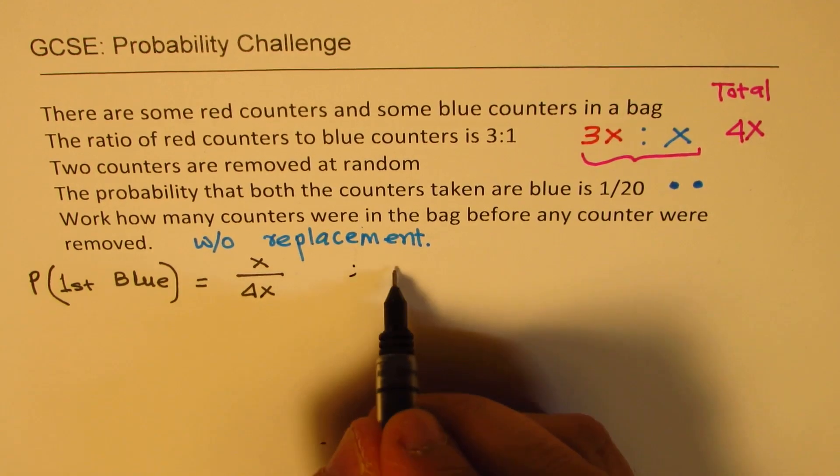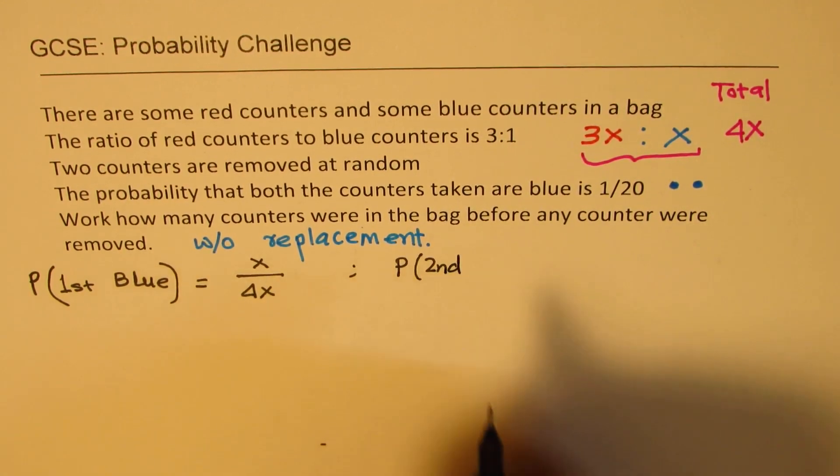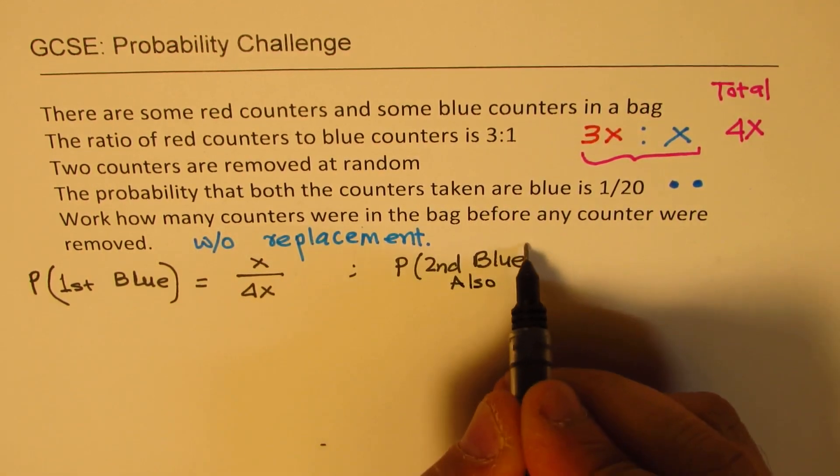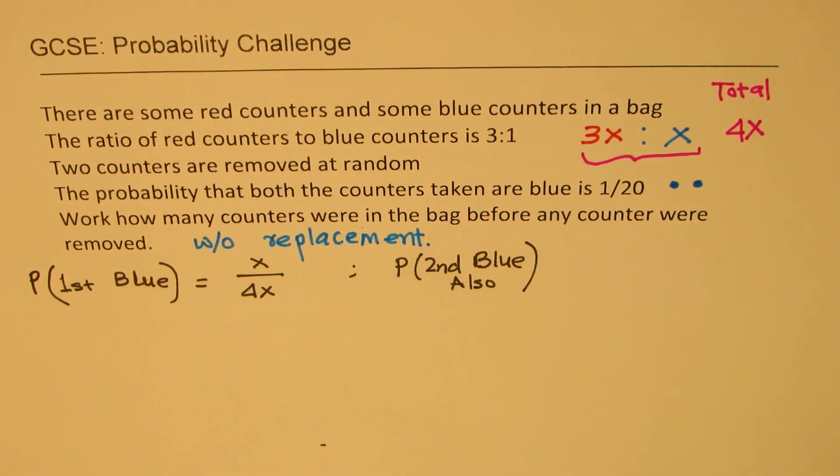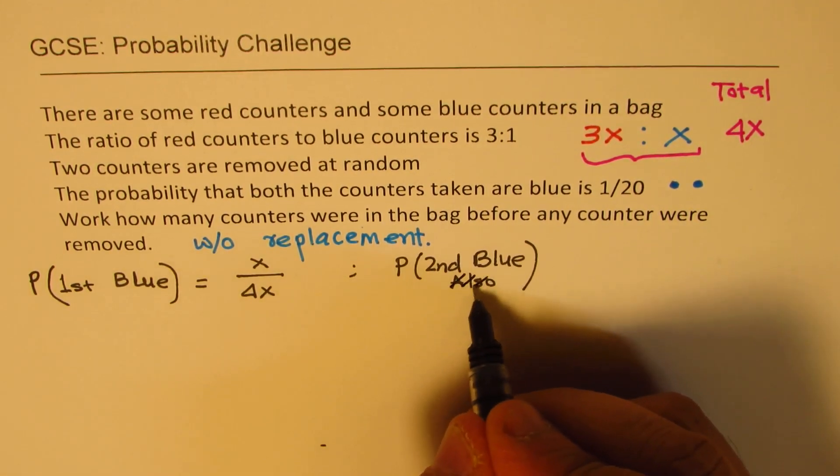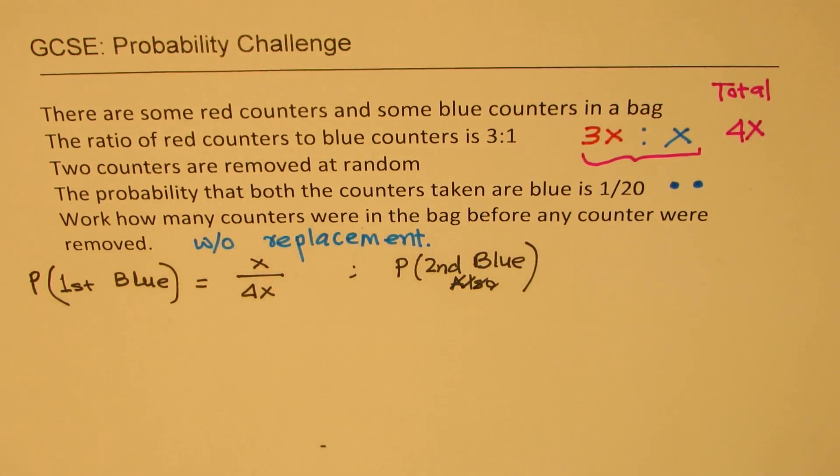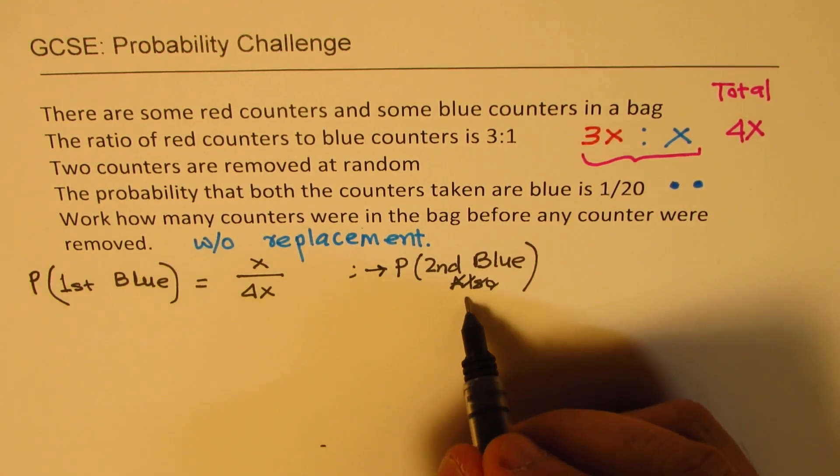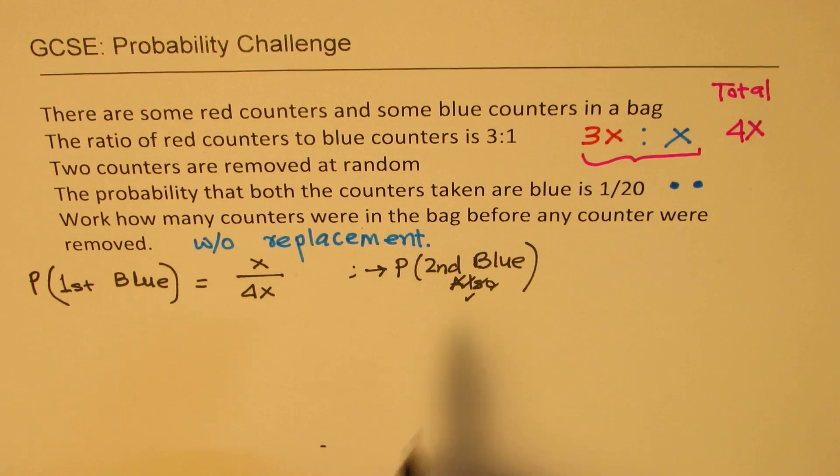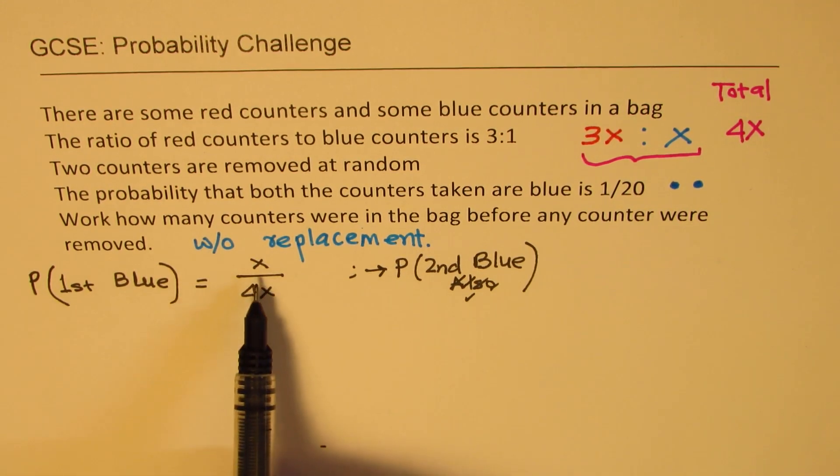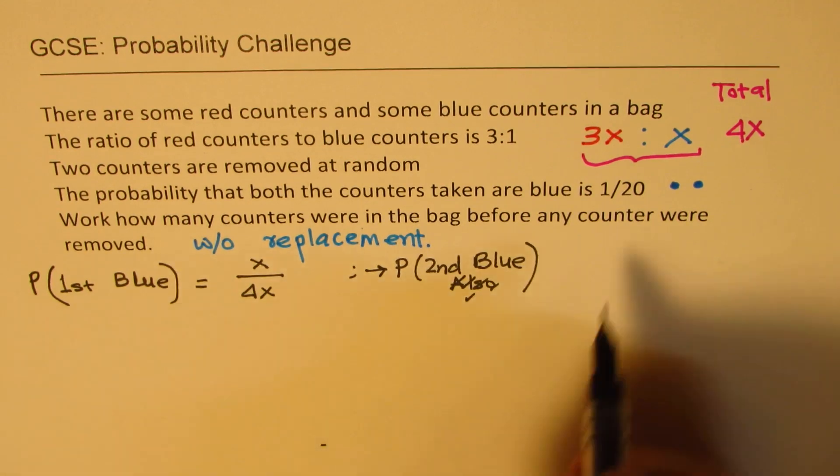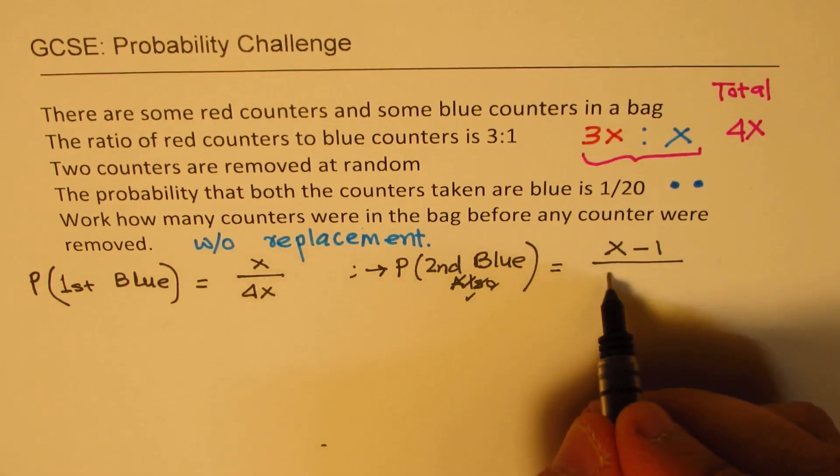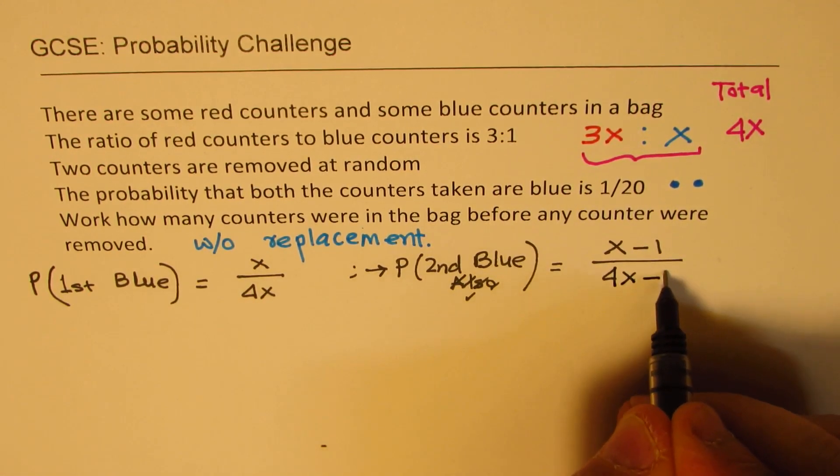Now we have to see probability of second blue also. So we'll first break it like second blue given that first one is blue. So the blue chips have reduced by 1. So we got now x minus 1 and you realize the total also reduced by 1 since you have taken or withdrawn one.